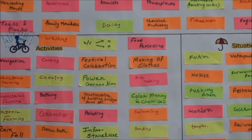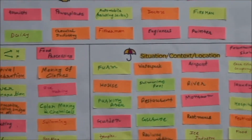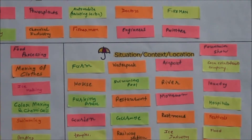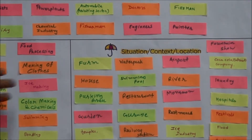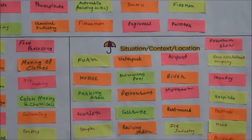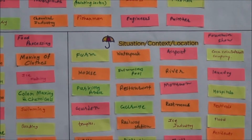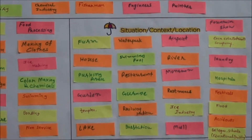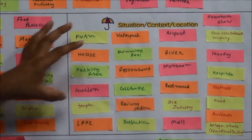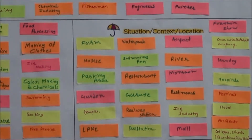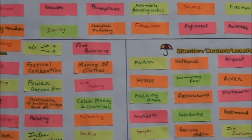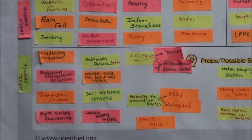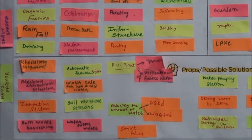The third section is situation, context, or location — where these activities are happening exactly. If washing, cooking, and cleaning are happening, where are they happening? They are happening in the house. If we are talking about irrigation, where is it happening? It is happening in the farm. I will mention all the activities and where they are happening. After filling these three sections, I still don't know what the problem is or what problem solution I am going to give.